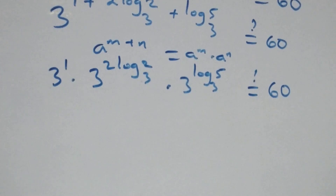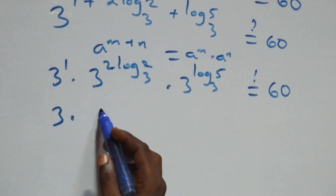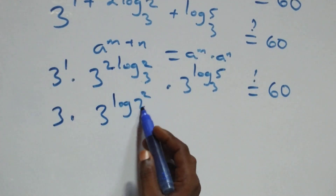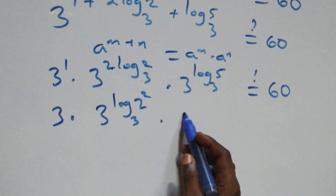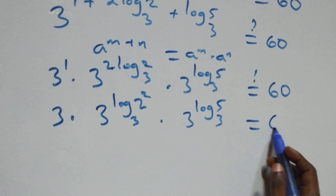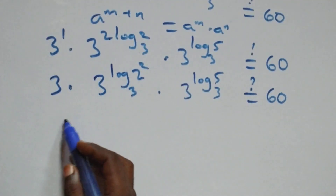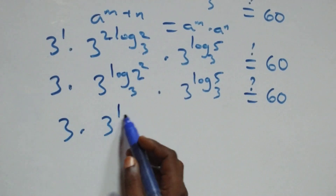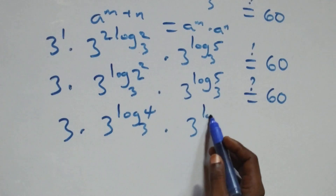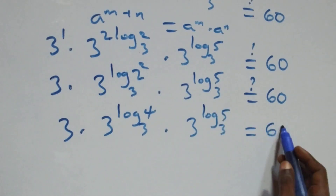Now 3 raised to power 1 is 3. Moving the 2 from the exponent using the power rule, 3 raised to power log(2 squared) equals 4. And 3 raised to power log 5 base 3 equals 5. So the left-hand side becomes 3 times 4 times 5, which is 60. This equals the right-hand side.